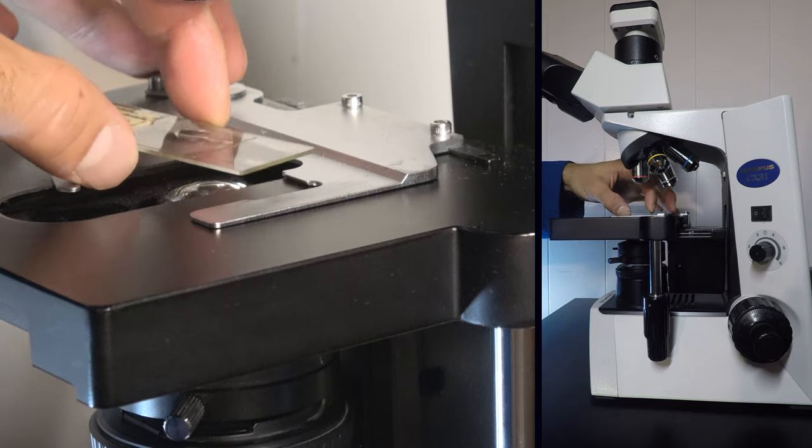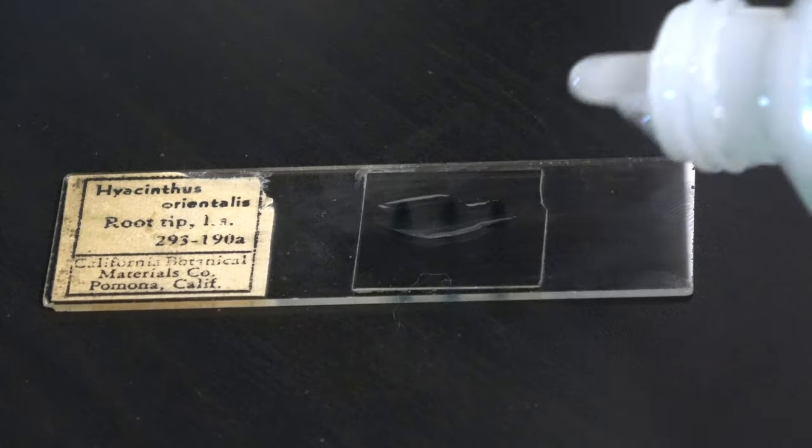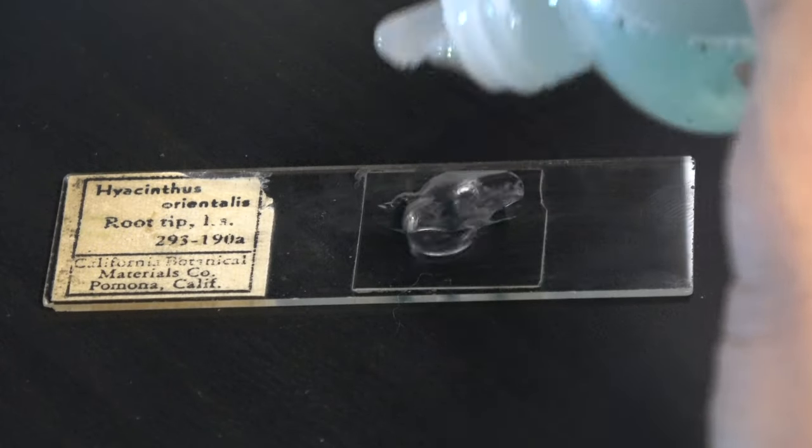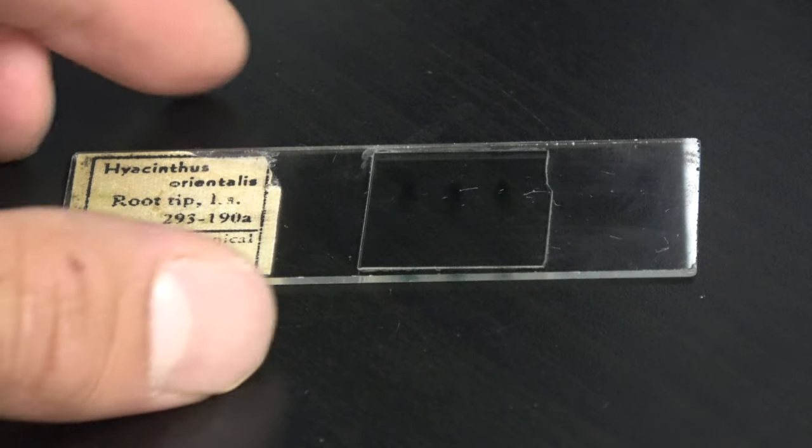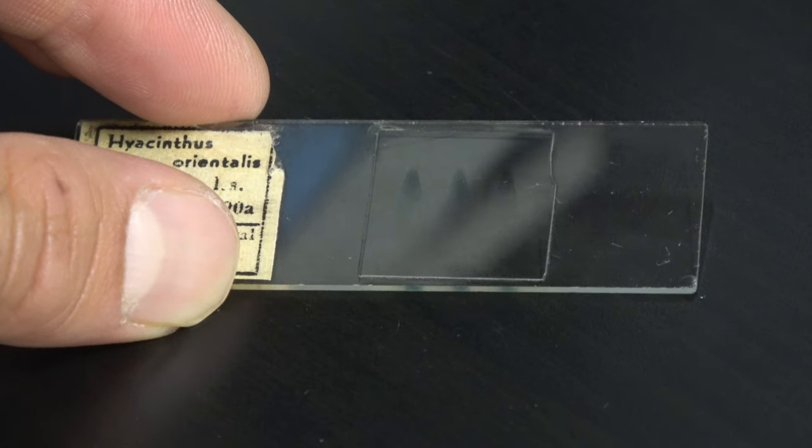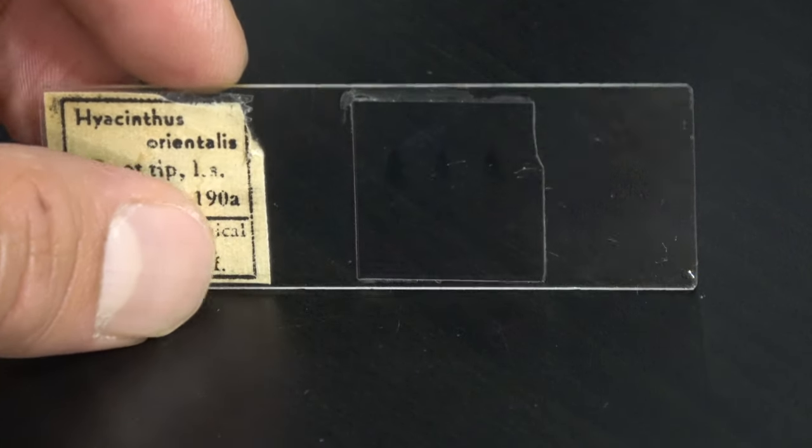The slide should be cleaned off and put away first. A few drops of lens cleaner or ethanol will work, and you can dry it off using a chem wipe. The slide should not have any oil residue remaining. Carefully place it back into the slide box for the next scientist.